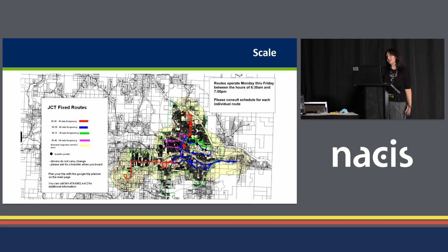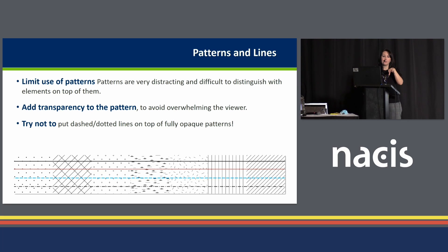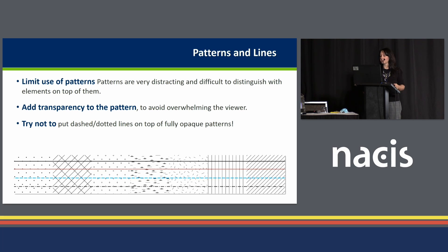Scaling: make sure your scale allows for enough white space between each object, and use leader lines around crowded areas. Patterns and lines: try not to use more than two patterns — they can be very distracting and hard for low vision users to discern, especially when you have map objects on top of them. If you're going to use patterns, add transparency to reduce their emphasis so map objects pop out. And try not to use dashed or dotted lines on top of patterns, as this is extremely difficult for low vision users to see.